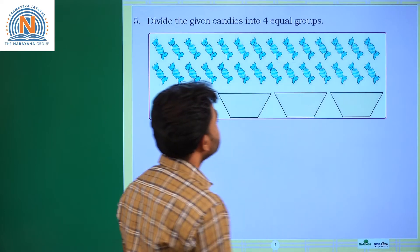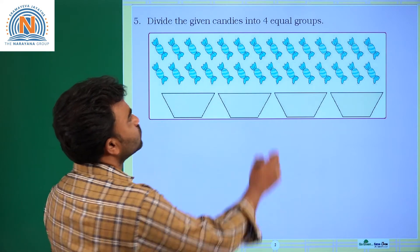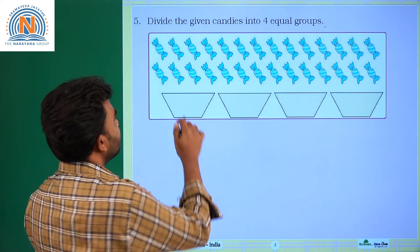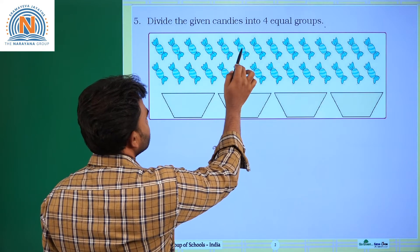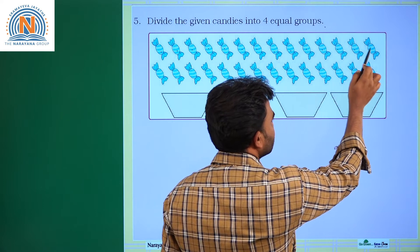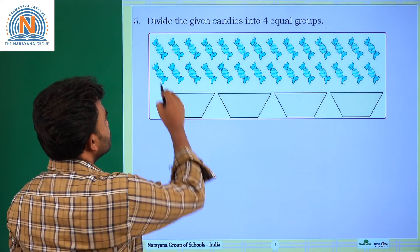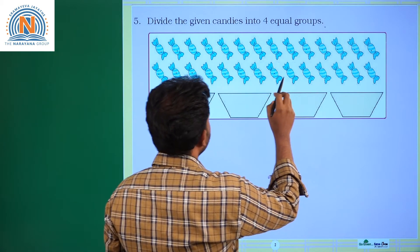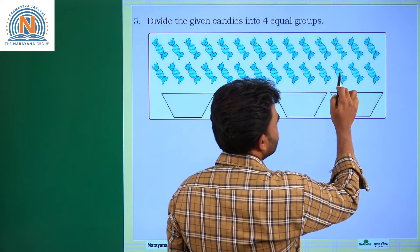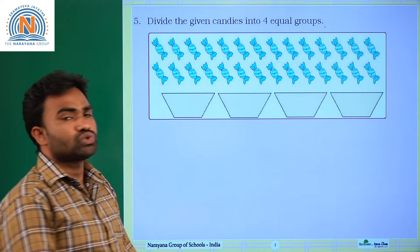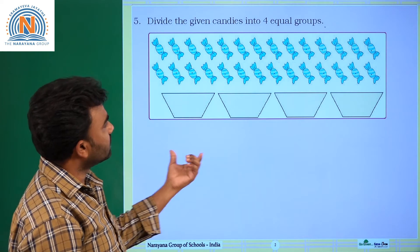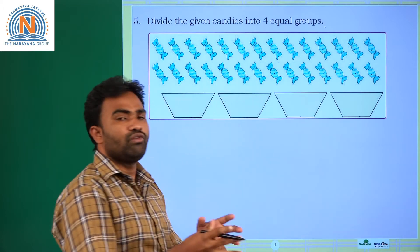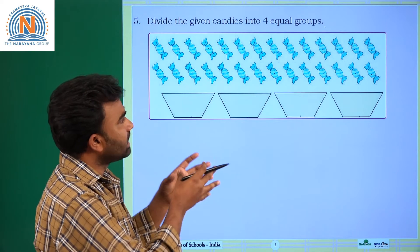Next question: divide the given candies into four equal groups. Find the total number of candies. How many candies are there? 1, 2, 3, 4, 5, 6, 7, 8, 9, 10, 11, 12, 13, 14, and the bottom row also: 15, 16, 17, 18, 19, 20, 21, 22, 23, 24, 25, 26, 27, and 28. So total number of candies is 28. And number of groups: 1, 2, 3, 4 — so four groups.